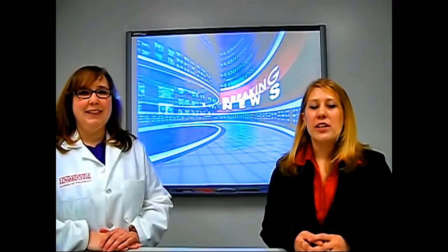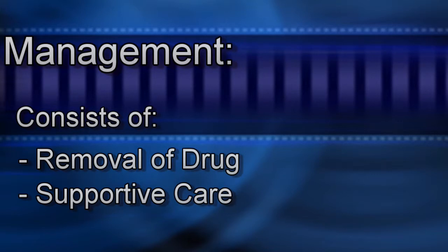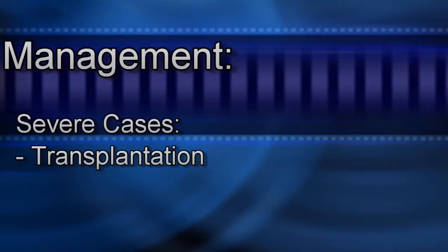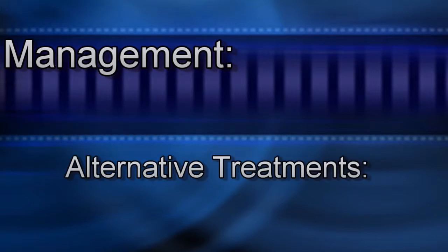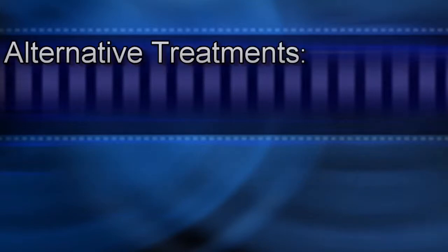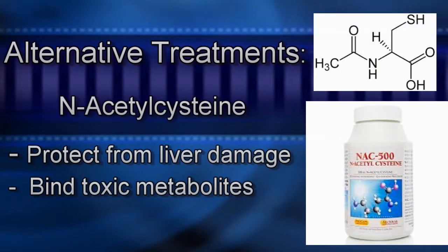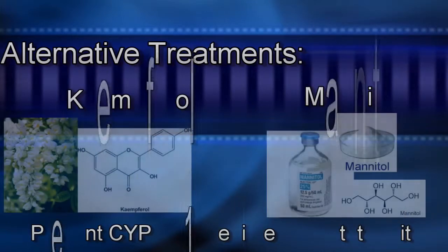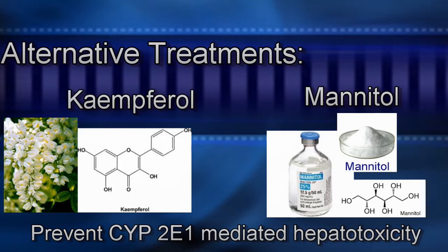Now we are here with Dr. Williams, a pharmacist who has been practicing at Gotham General for over five years. She worked with Dr. Freeman on the treatment of this case. After diagnosis of liver damage, what did you do? Unfortunately, there isn't a whole lot we can do after diagnosis. The management of isoniazid-induced hepatotoxicity largely consists of removal of the isoniazid and supportive care. In more severe cases, liver transplantation may be needed. Alternative treatments are currently being studied, including N-acetylcysteine during therapy to protect the liver by increasing liver blood flow and possibly binding to toxic metabolites. Camphorol and mannitol are currently being studied in mice as adjuvants for preventing CYP2E1-mediated hepatotoxicity induced by isoniazid.